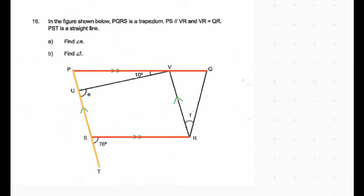Line PT intersects the parallel lines PQ and SR, which are marked in red. The intersecting line PT is also marked. This means the two angles marked in green are equal to each other. Angle RST is 76 degrees, so angle QPU is also 76 degrees.